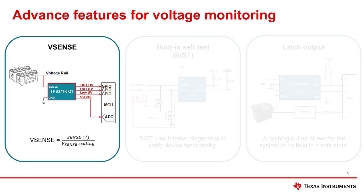Vsense is a scaled-down voltage of the high-voltage sense pin input for real-time measurement with low-voltage processors. Vsense is intended to be used with an ADC to give the system voltage telemetry data for control systems and for redundancy and voltage monitoring.